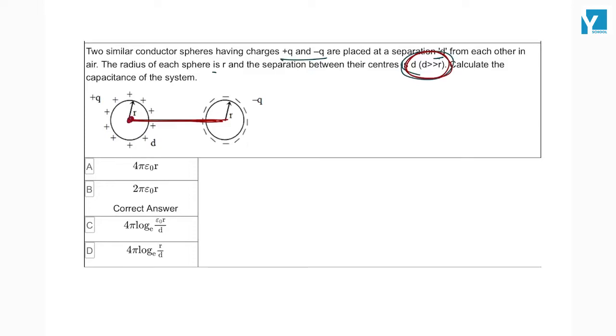If I talk about this one charge, what is the potential of this center? KQ upon r. This is the voltage of this one side. And if I talk about the center of the negative charge, the potential minus VB will be negative. Basically, you can write the value of VB, so its value is minus KQ by r.